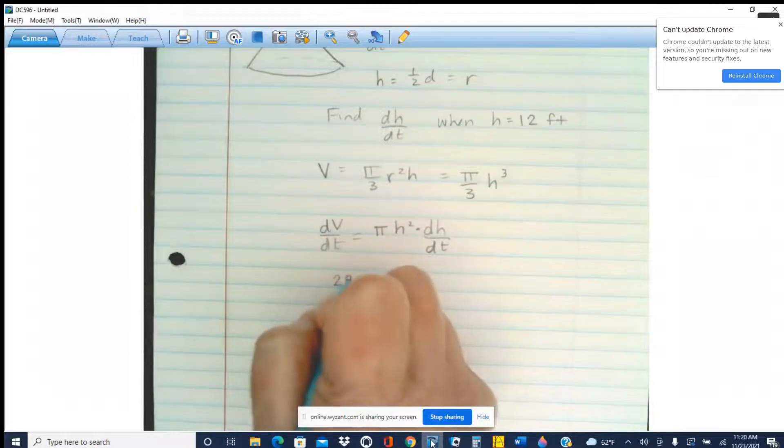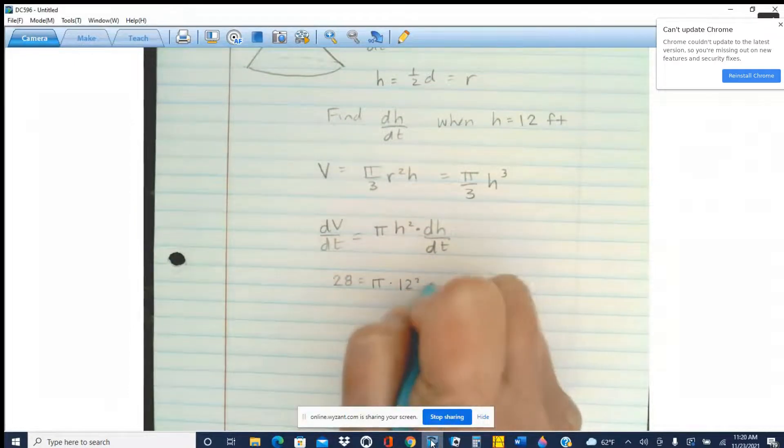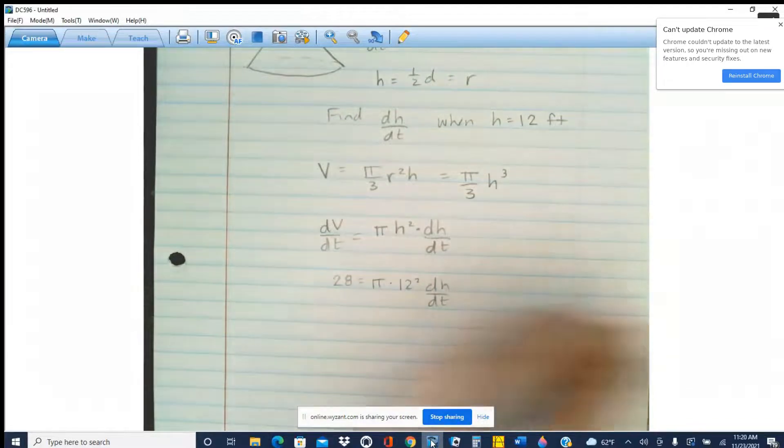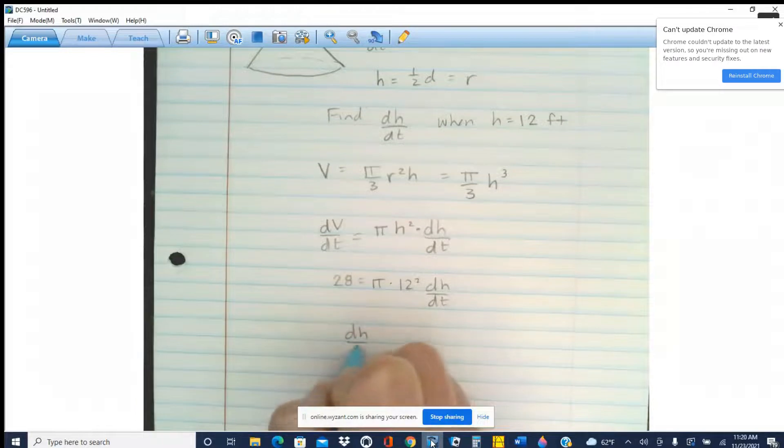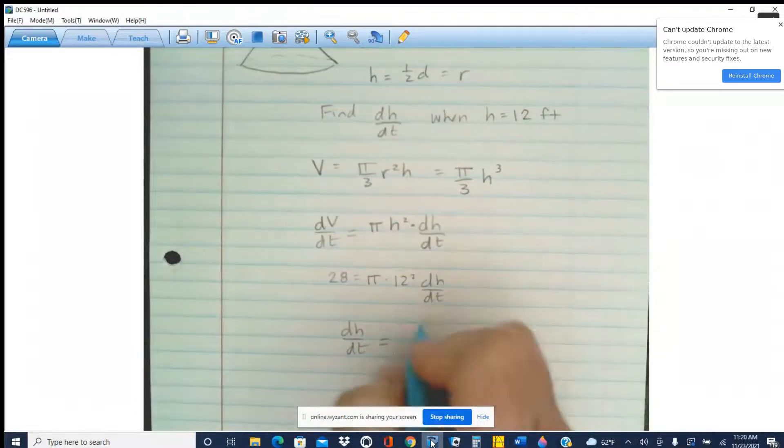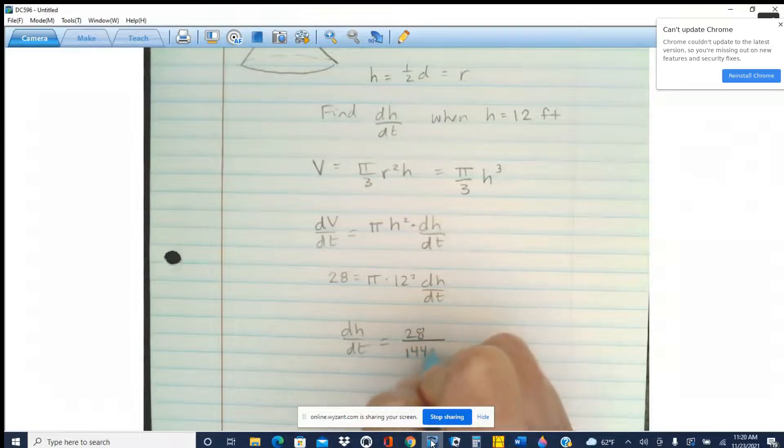So what I get is that 28 is equal to pi times 12 squared dh/dt. So dh/dt is going to be 28 over 144 pi. And that will be feet per minute.